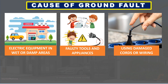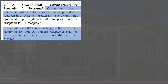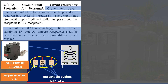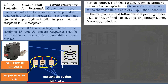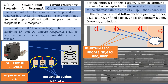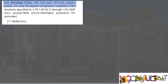Ground faults can be caused by equipment in wet or damp areas, faulty or leaking tools and appliances, and using damaged cords or wiring. According to Section 2.10.1.8, ground fault circuit interrupter protection for personnel shall be provided as required, with GFCI installed and integrated with the receptacle for branch circuits. A GFCI circuit breaker may be used instead of GFCI outlets. For distance determination, GFCI outlets are required if within 1800 millimeters from the edge of the sink, measured as the shortest path a cord would follow without piercing a wall, floor, ceiling, fixed barrier, or passing through a door or window.